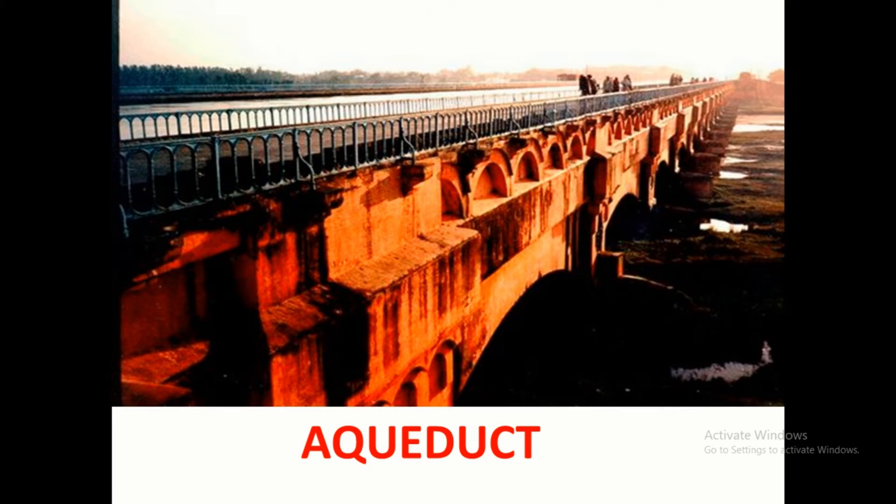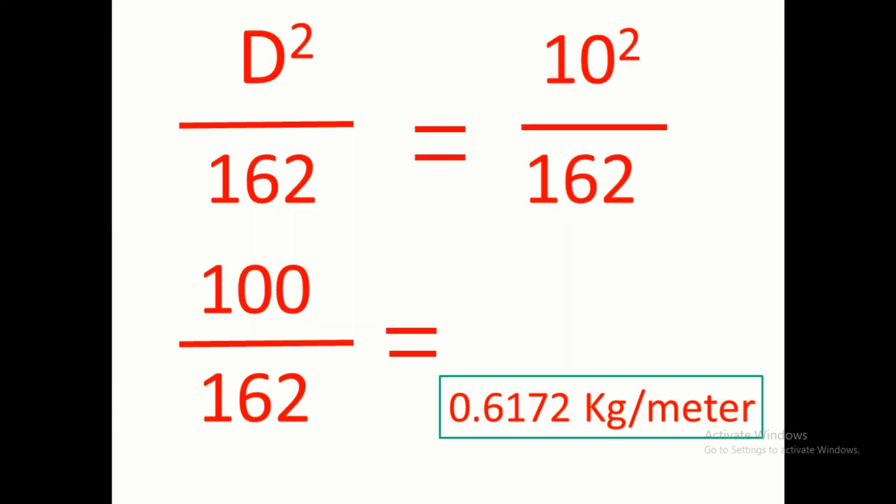This higher diameter bar is also used on the aqueduct, as the load coming on the structure is also very high. 64 mm and 128 mm bar are also used for aqueduct. Now we will see the formula by which we could calculate the weight of the steel reinforcing bar without actually weighing it.